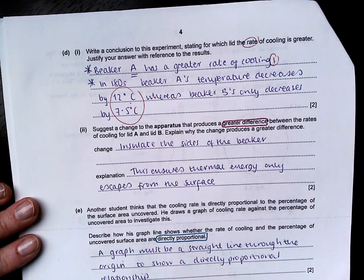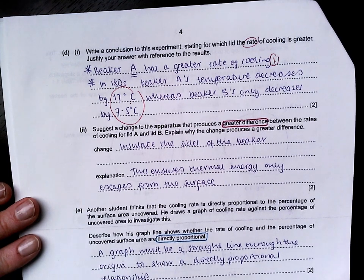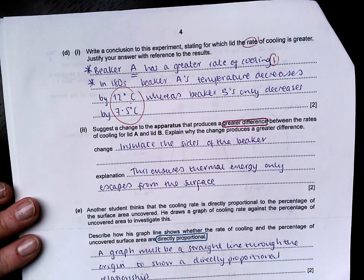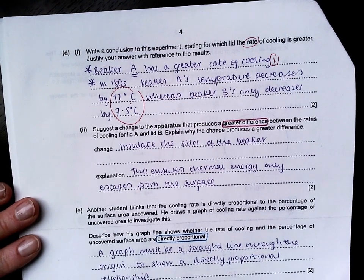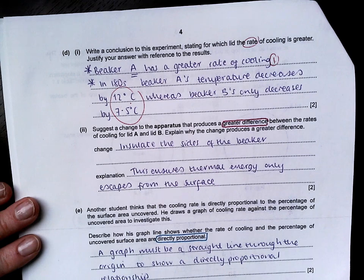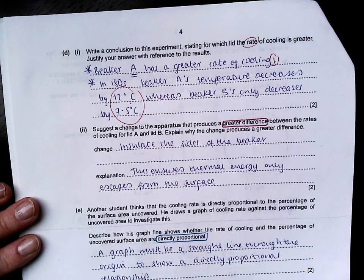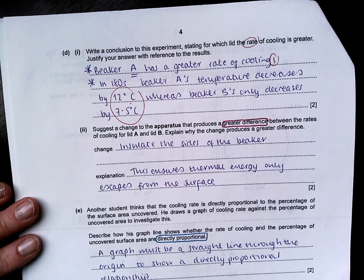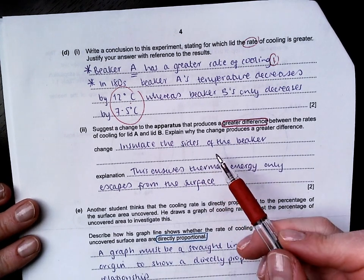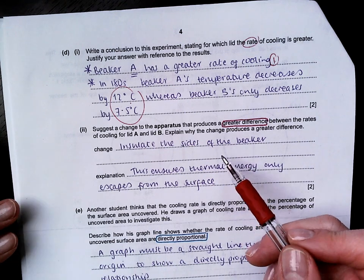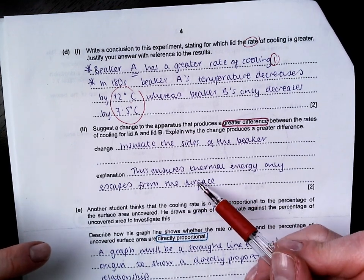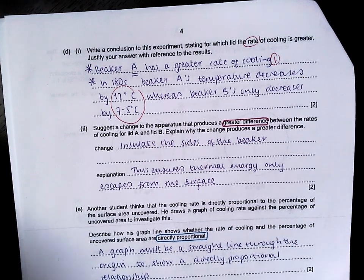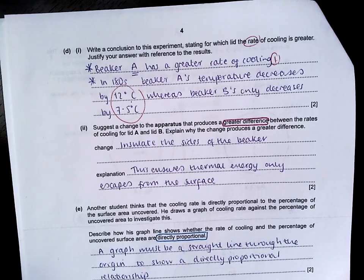In II, suggests a change to the apparatus that produces a greater difference between the rates of cooling for lid A and lid B. We need to make sure that we want a bigger difference between the energy loss between the two beakers. There will be a lot of energy loss to the surroundings through the sides of the beaker. If we insulate the sides of the beaker, it ensures that the thermal energy is only escaping from the surface, which will make the surface area more important and it will cause a greater difference.